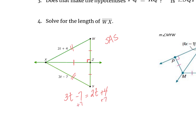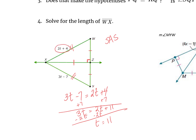Adding 7 to both sides gives 3t equals 2t plus 11. Subtracting 2t from both sides gives t equals 11. But that didn't answer the question — it wants the length of WX. So substituting t equals 11 into the expression 2 times 11 is 22, and adding 4 gives a length of 26.